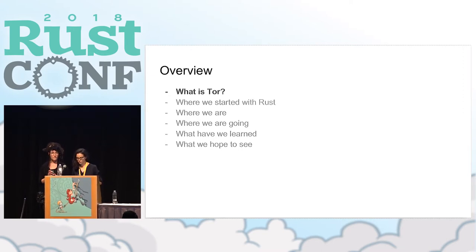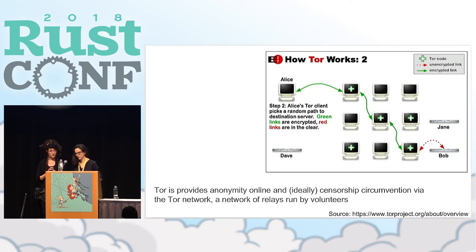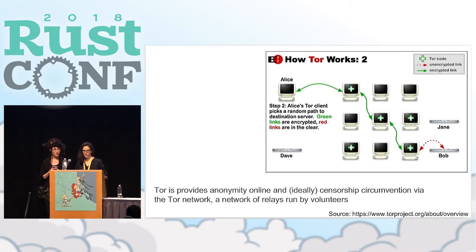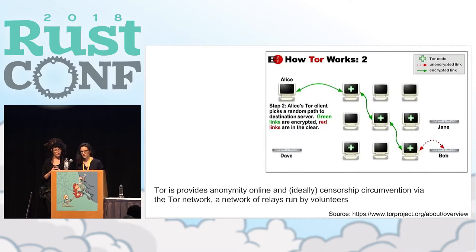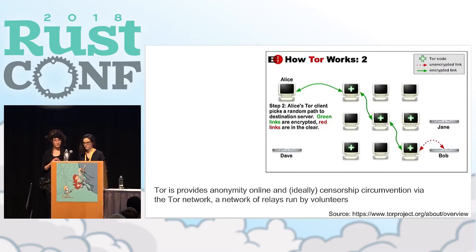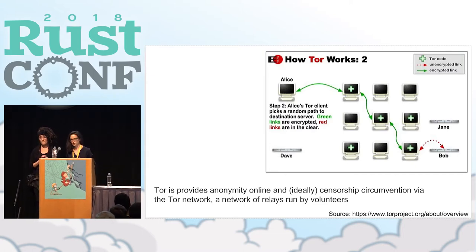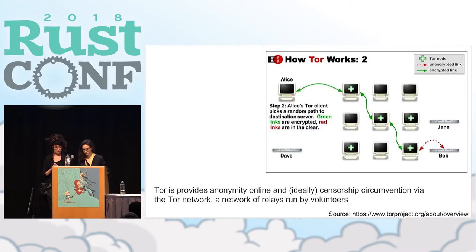Tor is an anonymity tool that allows people to use the internet anonymously. Tor runs on a client machine and there's also a network of relays that make up the Tor network. Client traffic is routed through the Tor network, providing anonymity for requests to the end server. It can also provide anonymity to the end server as well — Tor is both the client and server software and all of the relays that make up the intermediate network.